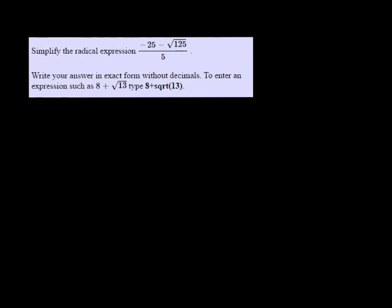We're going to simplify the radical expression negative 25 minus square root of 125 over 5. So negative 25 divided by 5 is just negative 5.